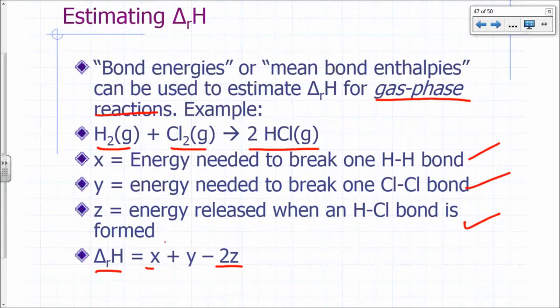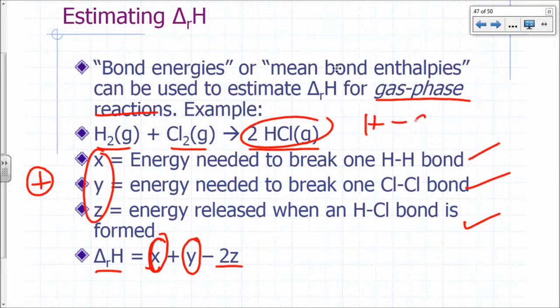Why is that? This is the energy needed. So if X, Y, and Z are just absolute values, these are positive numbers. So this is the energy needed to break the H-H bond plus the energy needed to break the Cl-Cl bond. How many HCl bonds are you forming here? Two, right? So minus 2 times the energy released when an HCl bond is formed.